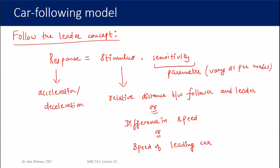The sensitivity parameter reflects how sensitively you respond to the stimulus. Some drivers maintain a constant speed regardless of the leader, while others react strongly. On a highway the sensitivity can have a different value than on a city road. This sensitivity parameter varies with circumstances and with the model, but it is definitely part of the model.